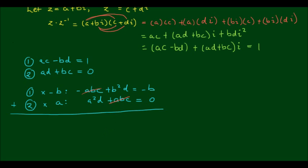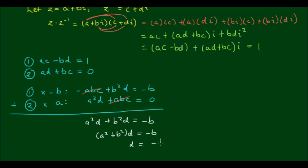So I end up with a squared d plus b squared d is equal to negative b. And then if I factor out a d, I get a squared plus b squared outside of d is equal to negative b. And then of course d is equal to negative b divided by a squared plus b squared. So this is one result that I'm after.